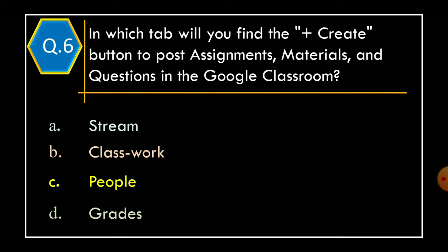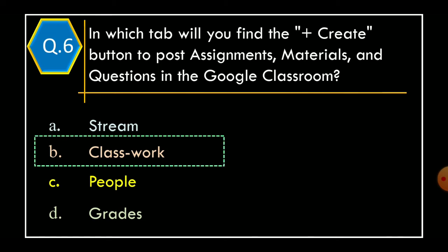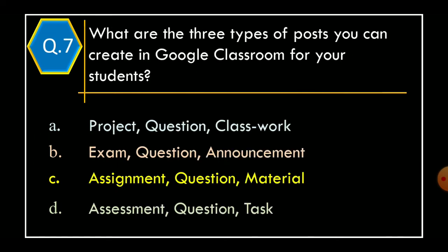Question 6: In which tab will you find the Create button to post assignments, materials and questions in the Google Classroom? Option A: Stream, Option B: Classwork, Option C: People, Option D: Grades. And correct option is Option B: Classwork.